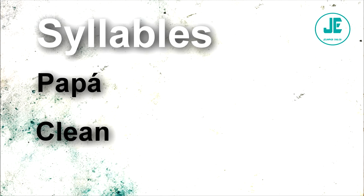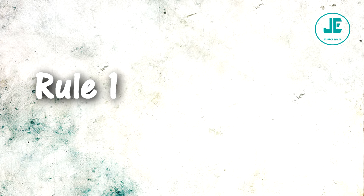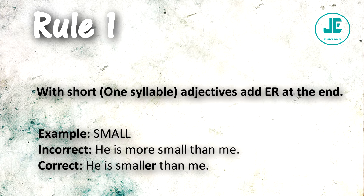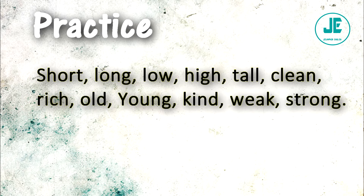Now I'm going to start explaining the rules. Rule number one: with short, one-syllable adjectives, add '-er' at the end. I chose the adjective 'small' as an example. The incorrect way: 'He's more small than me.' The correct way: 'He is smaller than me.'